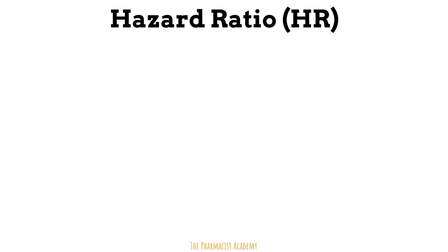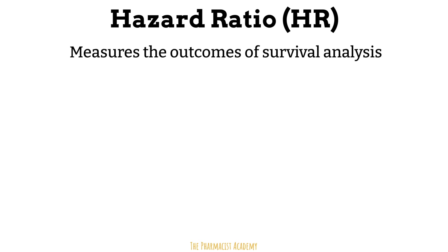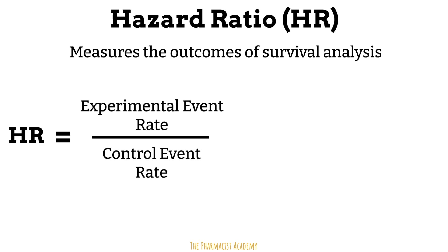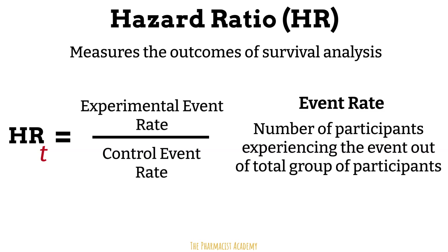We use hazard ratios to measure the outcomes or results of survival analysis — the chances of the event occurring in the treatment arm, also known as the experimental event rate, versus the chance of the event occurring in the control arm, also known as the control event rate. The event rate is simply the number of participants experiencing the event out of the total group of participants.